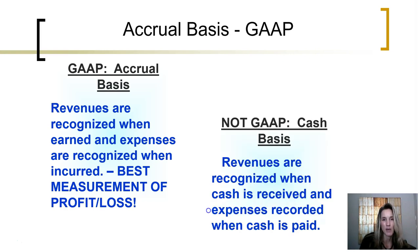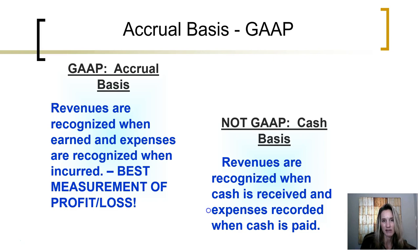The other method by which transactions can be recorded is under the cash basis, but this does not follow generally accepted accounting principles. Under the cash basis, revenues and expenses are only recognized when cash is paid. For purposes of financial accounting, we always follow the accrual method.